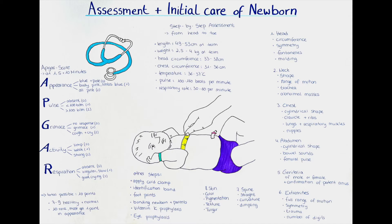Now we're done with the APGAR score and will determine a few measurements. First, length: a healthy baby born at term has a total body length of 49 to 53 centimeters. Next, weight: a baby less than 2500 grams is below the 10th percentile and is considered too small for gestational age. A baby over 4000 grams is considered macrosomic — too large for gestational age. Also important: babies initially lose around 10% of their birth weight, but within the first two weeks this weight should be regained with proper feeding.